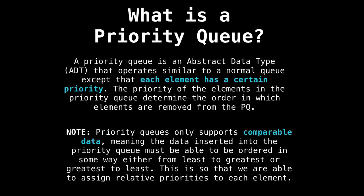So what is a priority queue? A priority queue is an abstract data type that operates similar to a normal queue, except for the fact that every element has a certain priority. So elements with a higher priority come out of the priority queue first. As a side note, I would like to remark that priority queues only support elements that are comparable. Meaning that the data we insert into the priority queue must be ordered in some way, either from least to greatest or greatest to least. This is so we can assign relative priorities between elements.